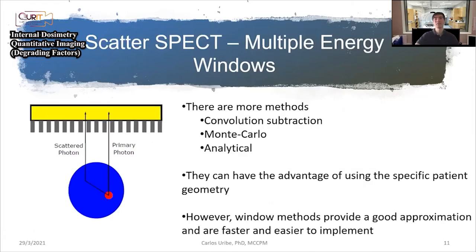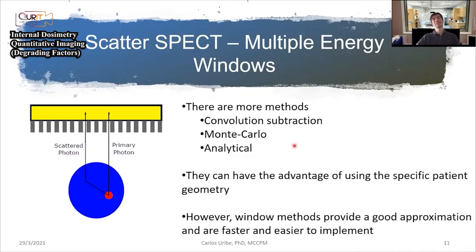There are more methods to correct for scatter: convolution, Monte Carlo methods, and analytical methods, each with its own advantages. Monte Carlo and analytical methods take more time and may be a little more accurate, but in practice the window methods are a very good approximation — faster and easier to implement.